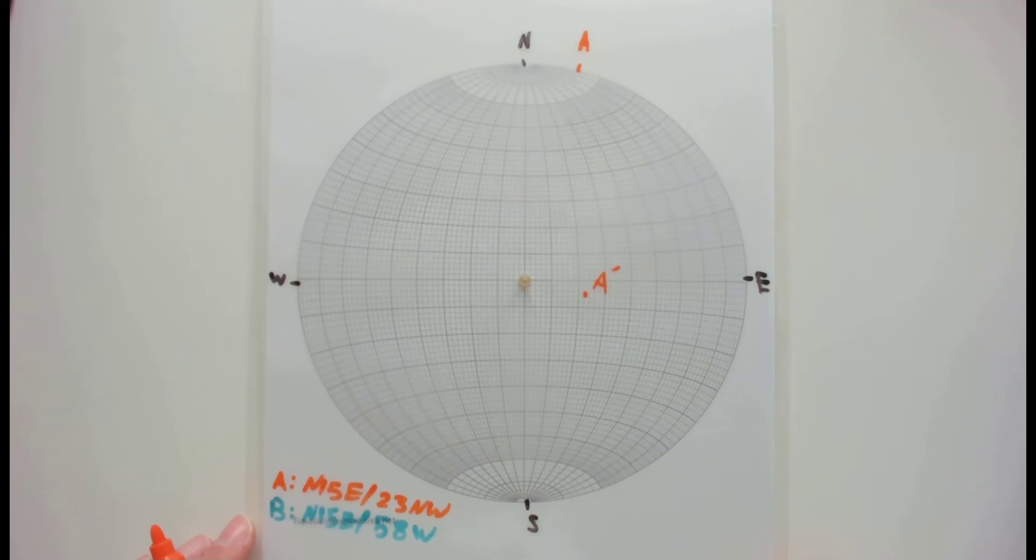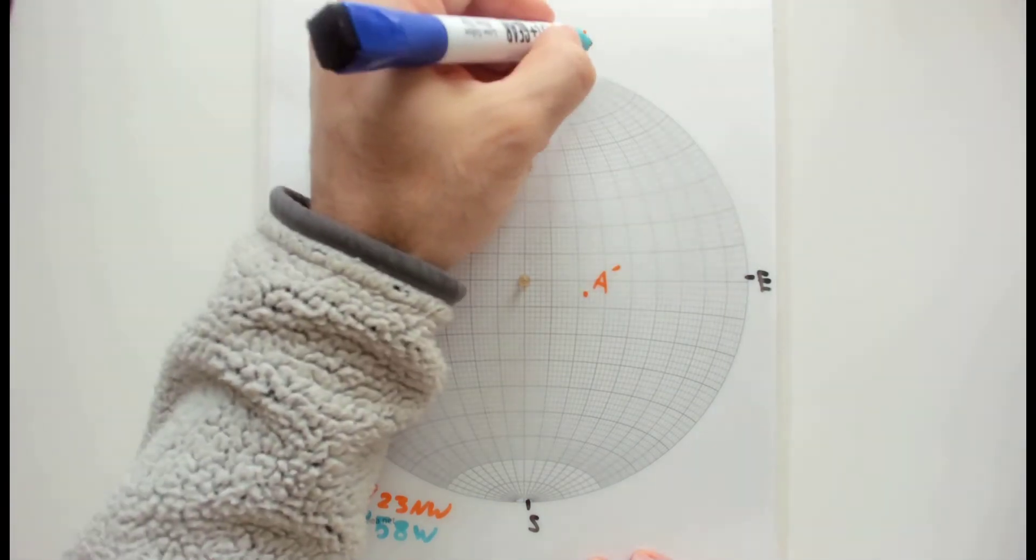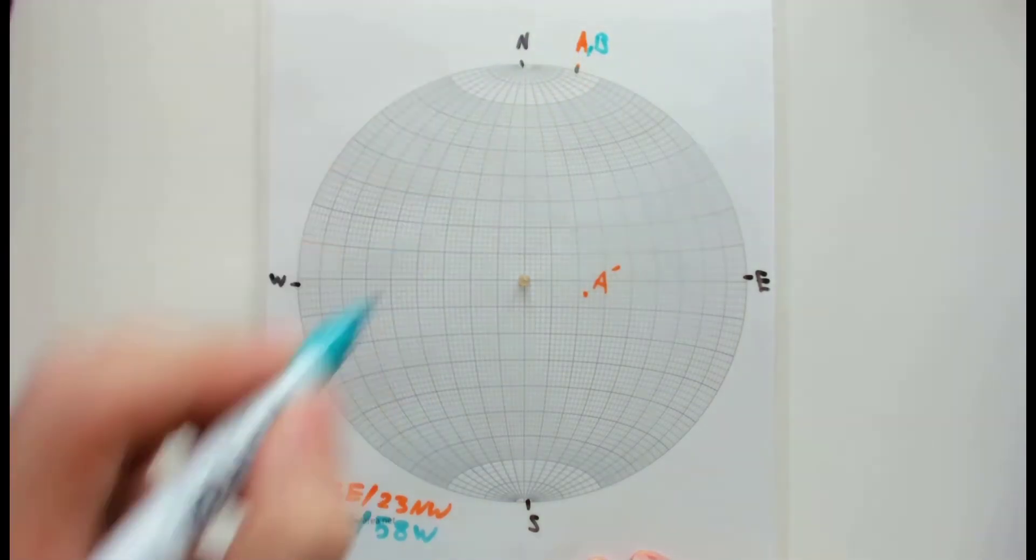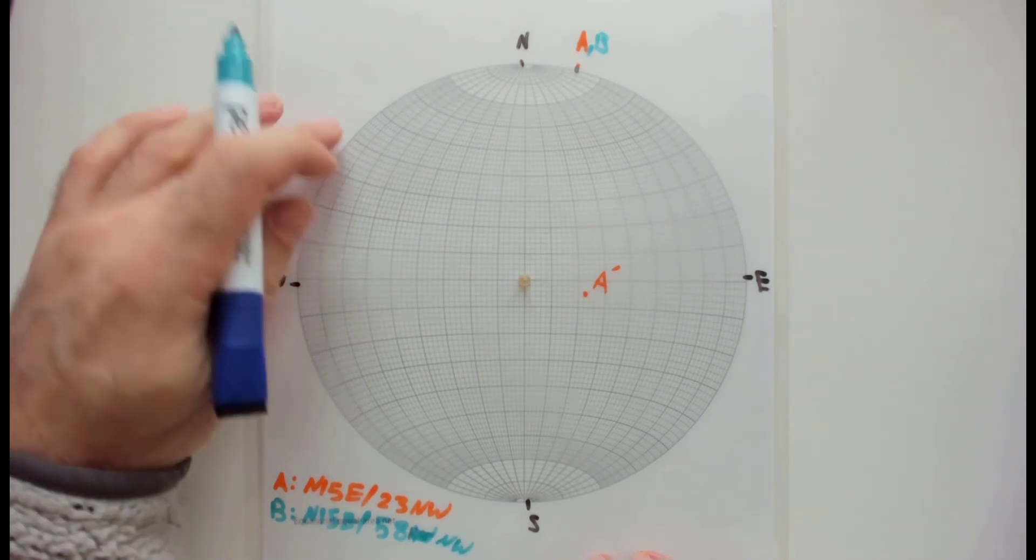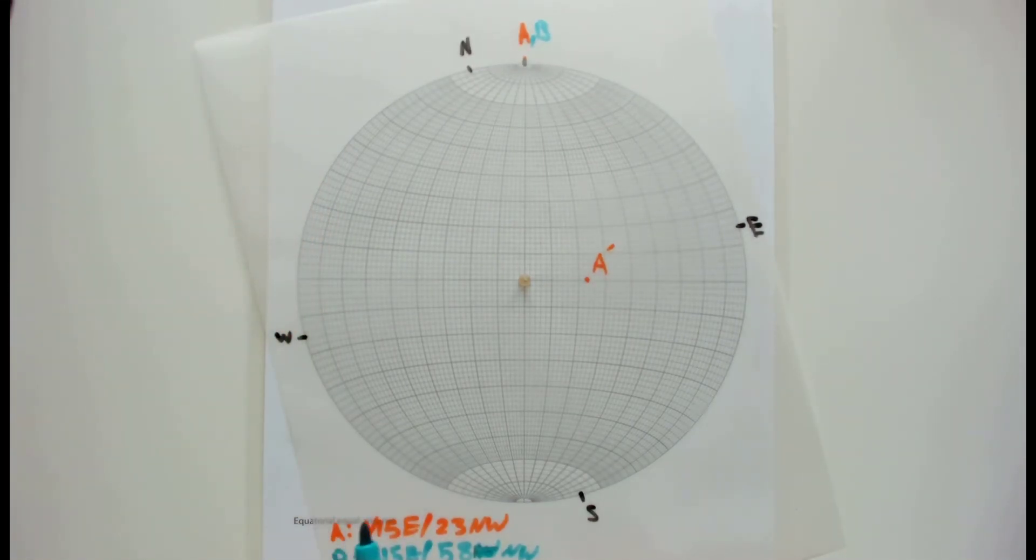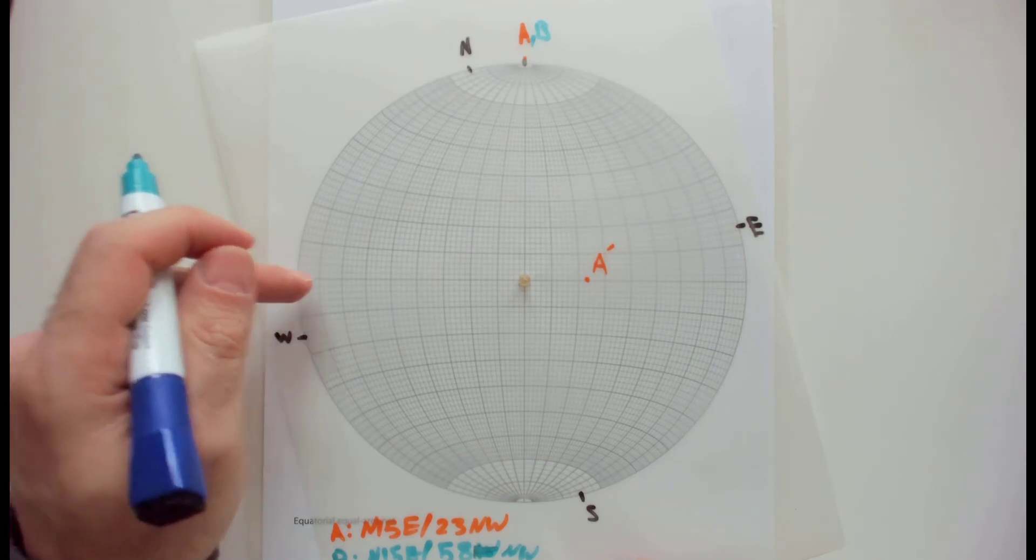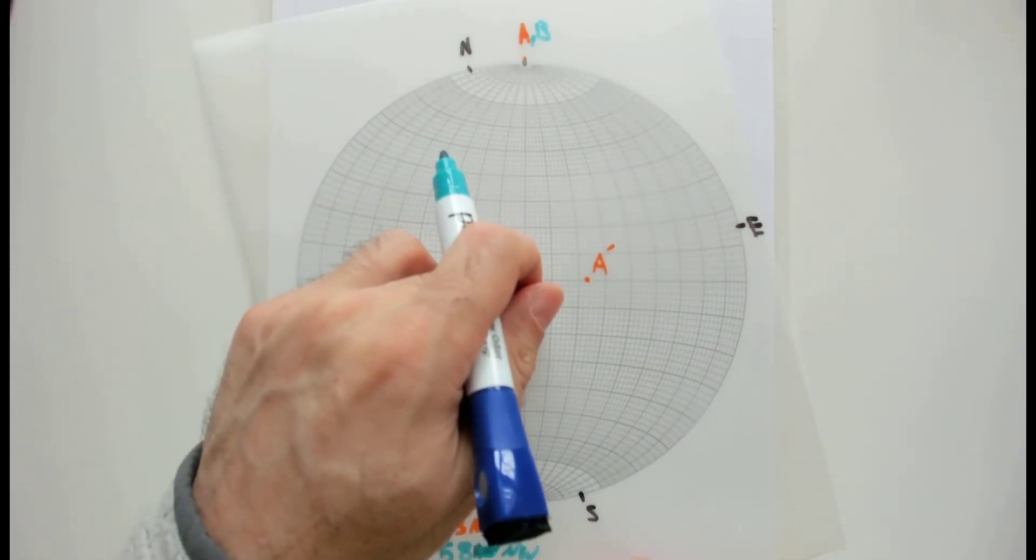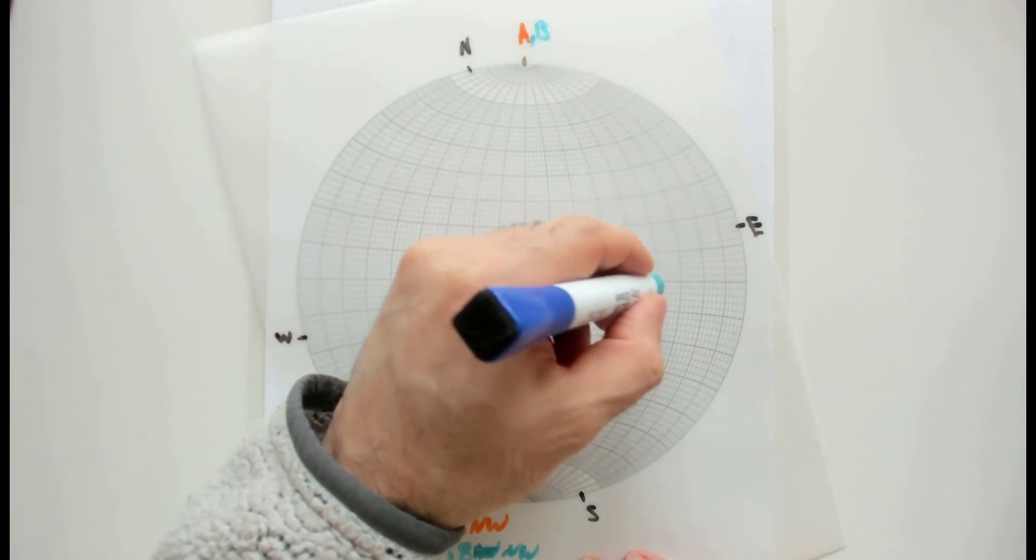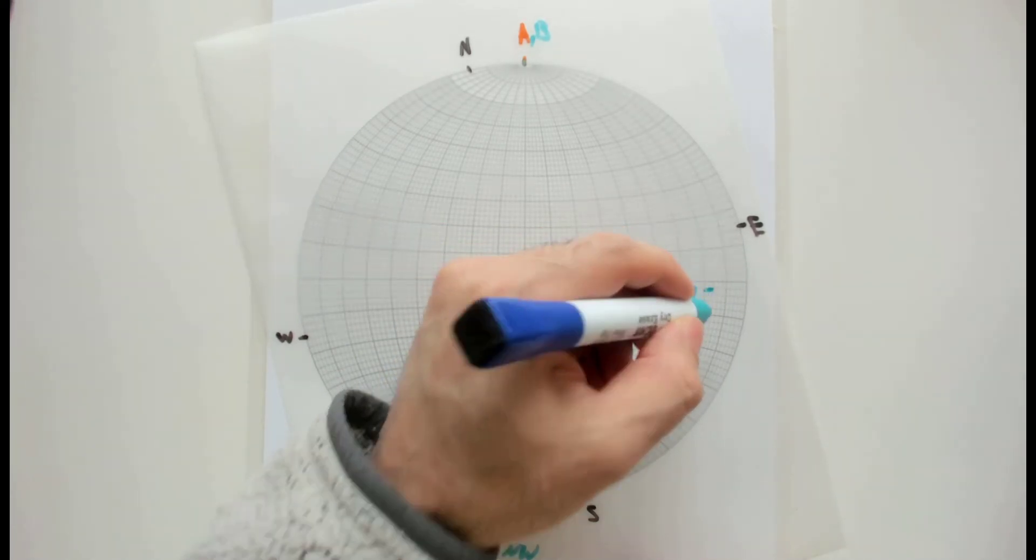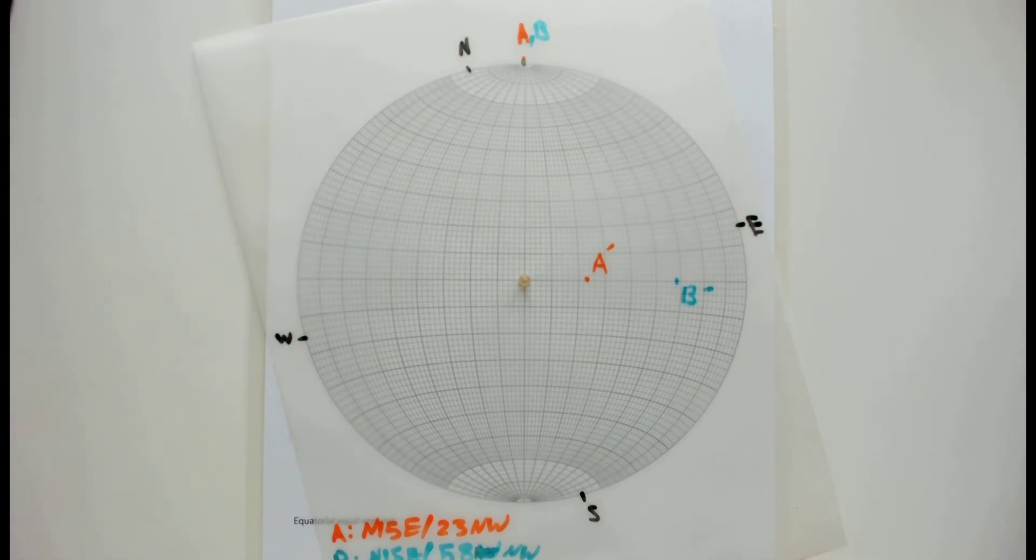For unit B, or the unit below the unconformity, we have the same strike at N15E. Again, it's dipping towards northwest. From the northwest, this time we need to go 58 degrees. Again, rather than counting 58 and 90, you say 90 and 58. So let's count 58: 10, 20, 30, 40, 50, 58. And that's my B prime. You can keep your vellum paper as is.